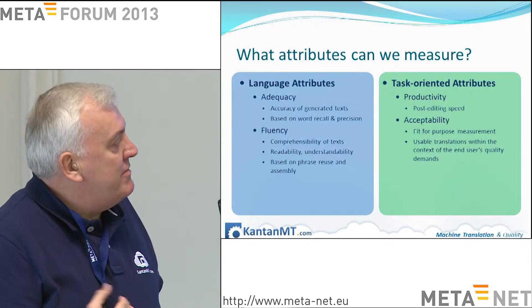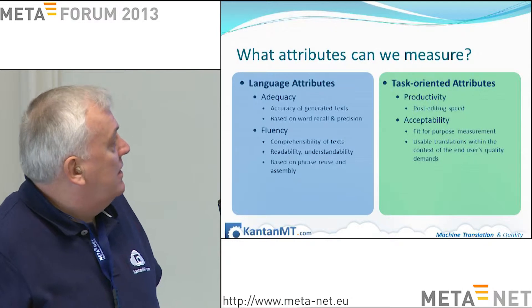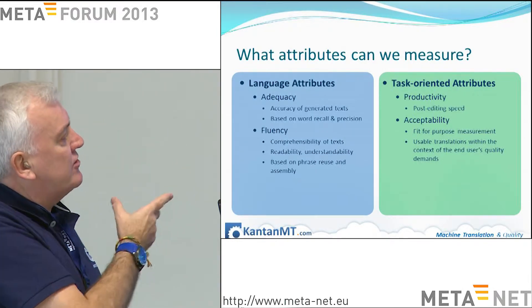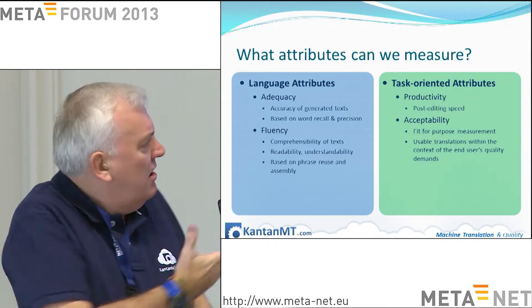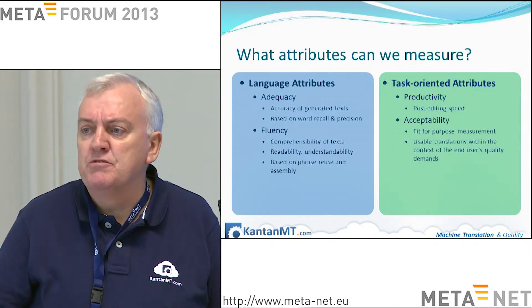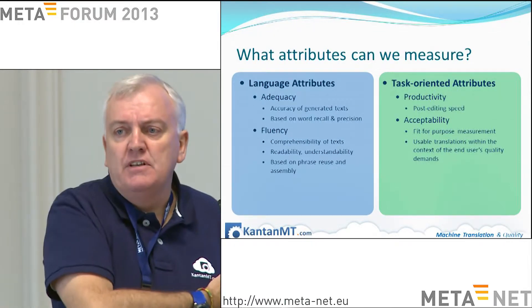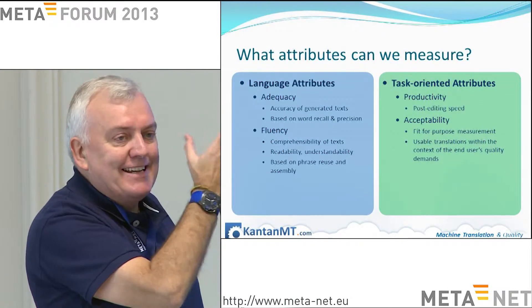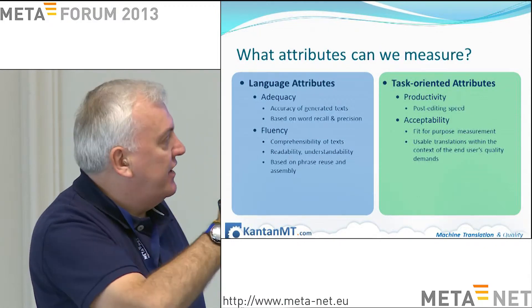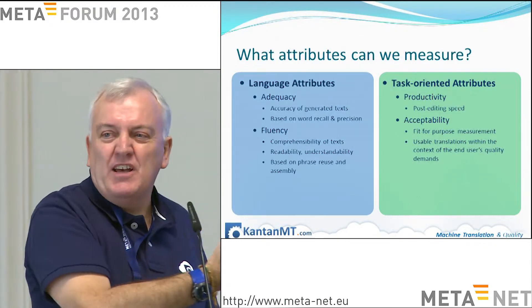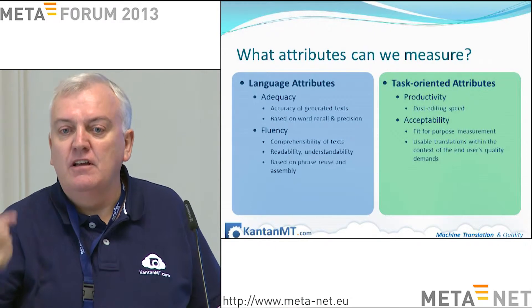Let's look at how we measure machine translation output today. There are multiple ways of doing it. Within translation, we need to measure the language attributes: how fluent is what we produce, how adequate is it, how readable is it? These are the language attributes we measure. There are also task-oriented attributes — the production side for a language service provider: how much time will I need to spend on post-editing? And that question infers: how much will it cost and when can I do it by?